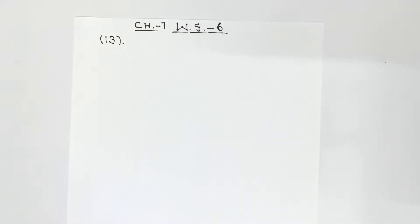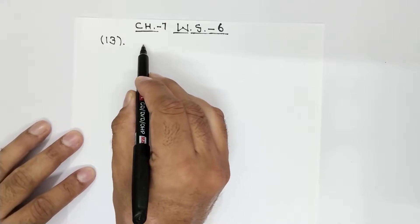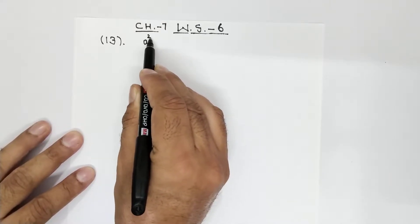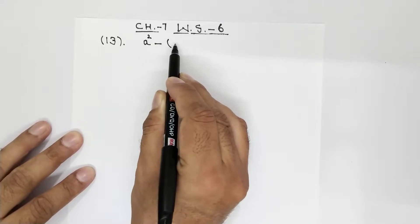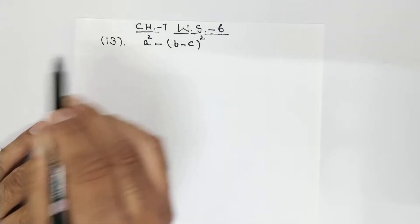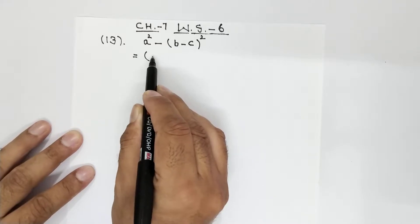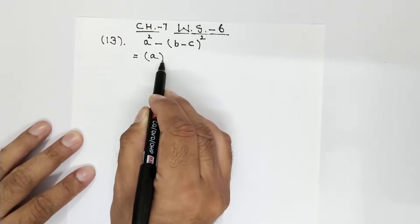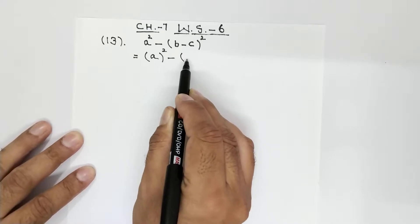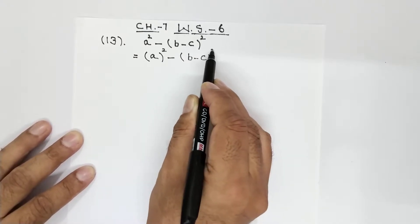Hello everyone, in this video I am doing question number 13 of Chapter 7 Algebraic Identities, Worksheet number 6. The question is to factorize a² minus (b minus c) whole square. In the next step, a² can be written as (a) whole square, minus (b minus c) whole square remains the same.